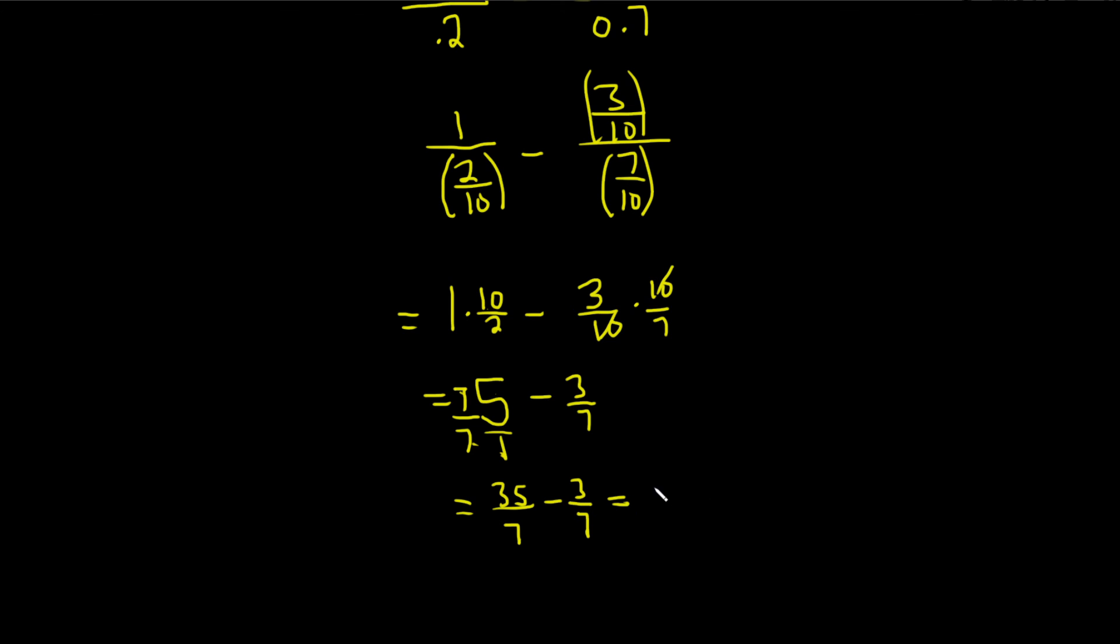35 minus 3 is 32, so we end up with 32 over 7. And that would be the sum of the infinite series. I hope this video has been helpful. Good luck.